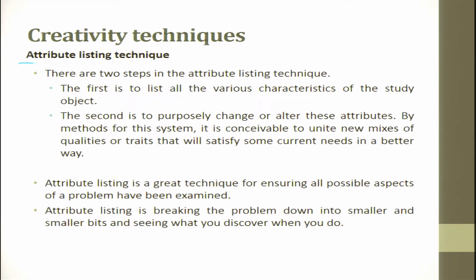The next technique is attribute listing. There are two steps: first, list all the variable characteristics of the study object. Second, purposefully change or alter these attributes. By this method, it is possible to unite new combinations of quantities or traits that will satisfy some current needs in a better way. This is essentially a cut-and-paste technology which we follow towards a solution.